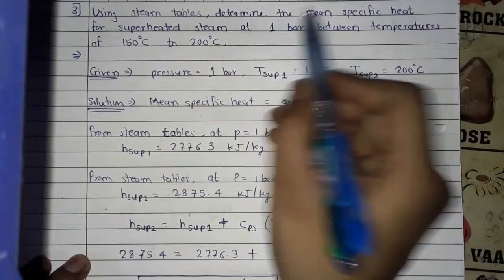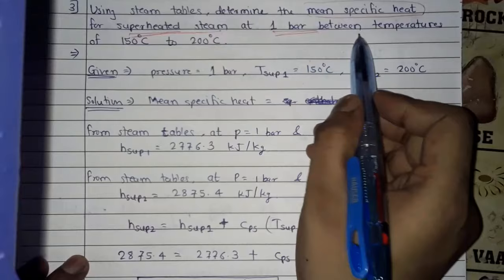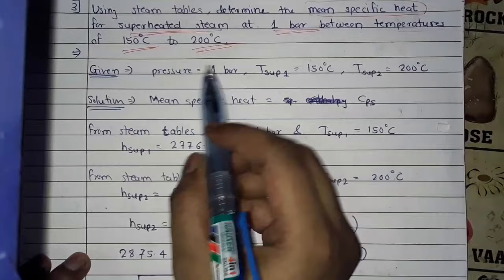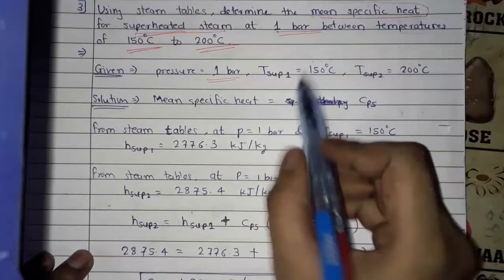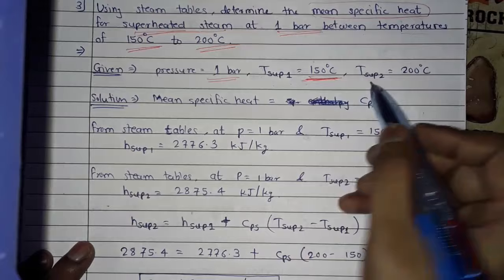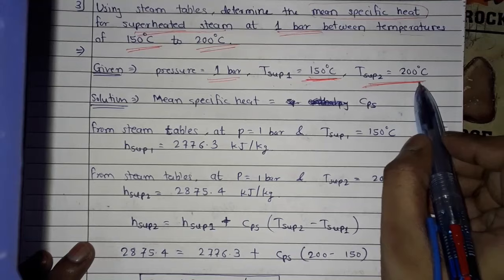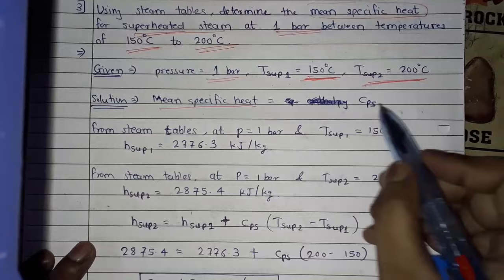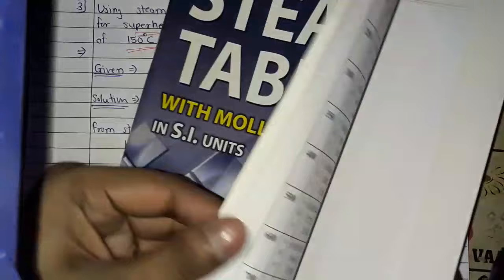Third problem: using steam tables, determine the mean specific heat for superheated steam at 1 bar between temperatures 150°C and 200°C. Given: pressure = 1 bar, T₁ = 150°C (first superheated steam), T₂ = 200°C (second superheated steam). We need to find mean specific heat of superheated steam, Cps.